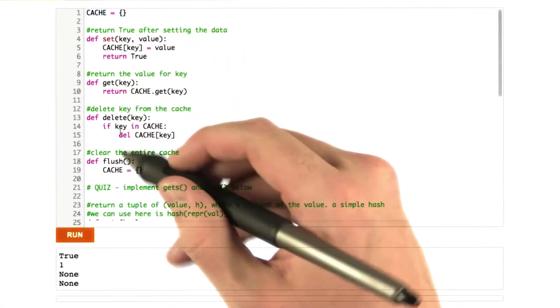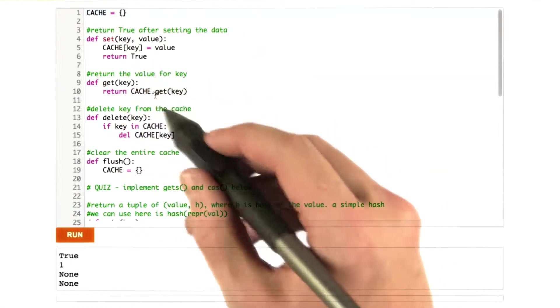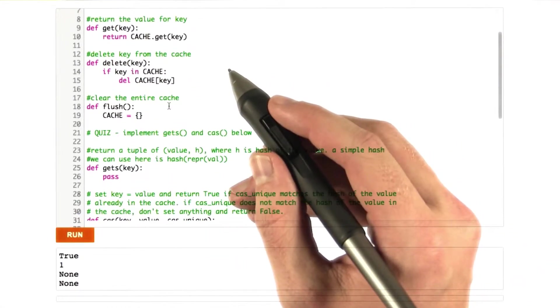We've got our other functions: set, get, delete. And cache is just a dictionary whose behavior mimics memcache for the most part.